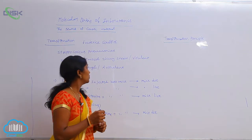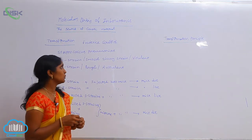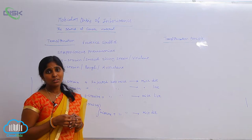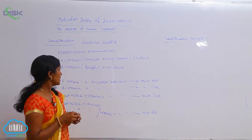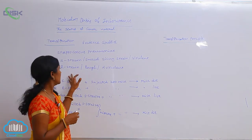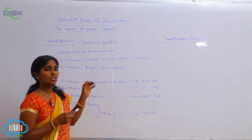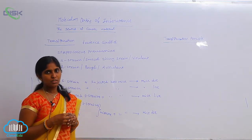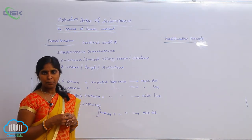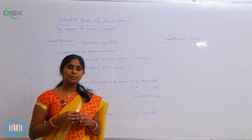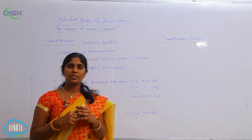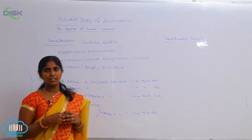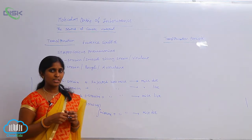S strains form smooth, shiny colonies and are the virulent form — they cause disease. Rough strains, or R strains, are avirulent forms. Both forms were collected separately and the experiment was conducted in different stages using healthy mice.